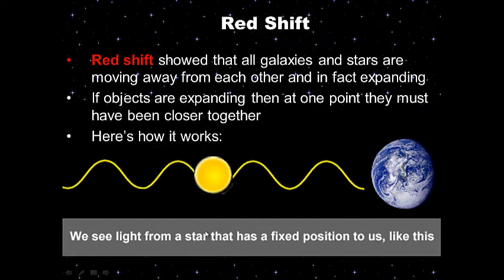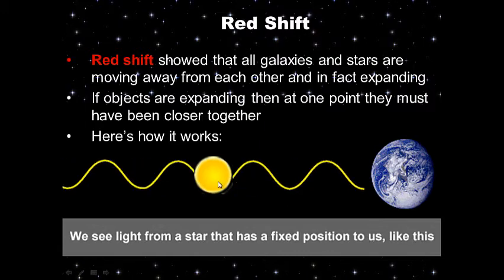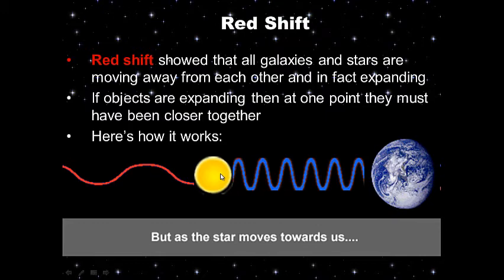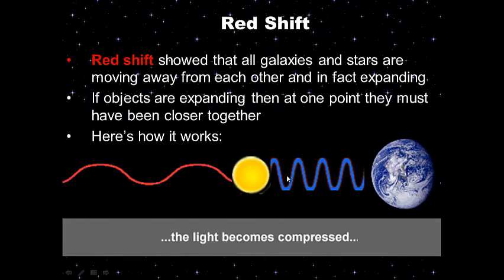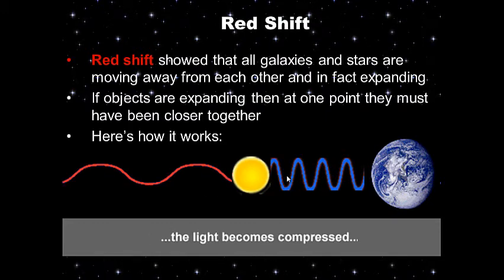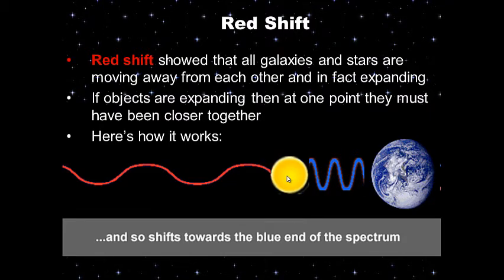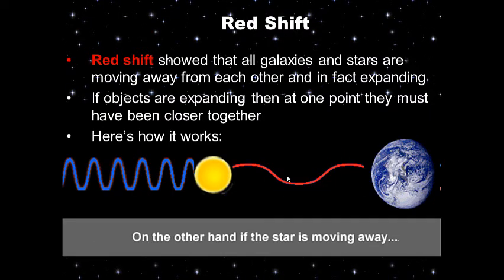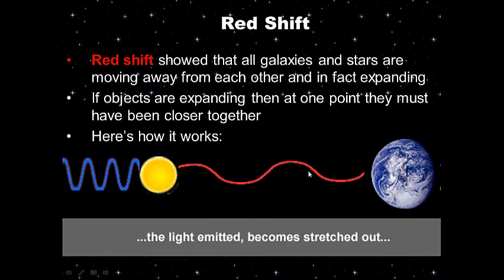We see light from a star that has a fixed position, but what we actually see is red light. All objects in deep space are sending us red light, which tells us they are moving away from us — light is expanding into greater wavelengths. That is redshift telling us that the universe is expanding.